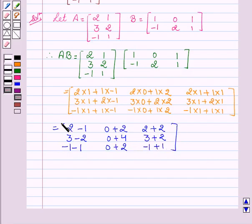This is equal to 1, 2, 4, 1, 4, 5, minus 2, 2, 0.